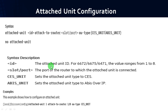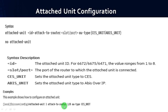For 6672, 6675, and 6471, the values range from 1 to 8. Slot or port position is the port of the router to which the attached unit is connected. Example: attached-unit 1 attach-to-router 1/8 au-type ces_unit — where 1 is the id and 1/8 is the port or slot position.